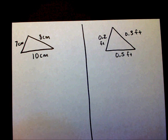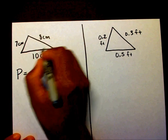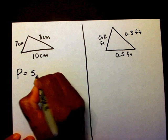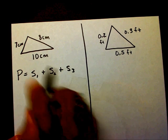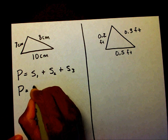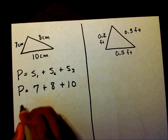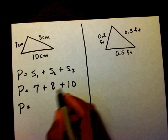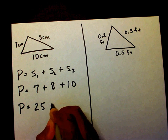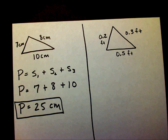All right. The formula for finding the perimeter of a triangle is side one plus side two plus side three. So the perimeter is seven plus eight plus ten. Seven plus eight is fifteen, and fifteen plus ten is twenty-five centimeters. That is your perimeter for this particular triangle.